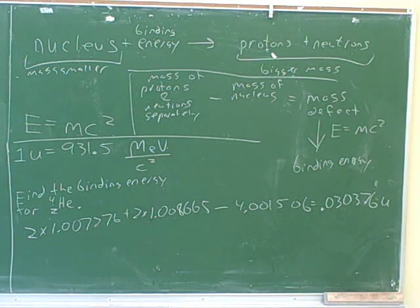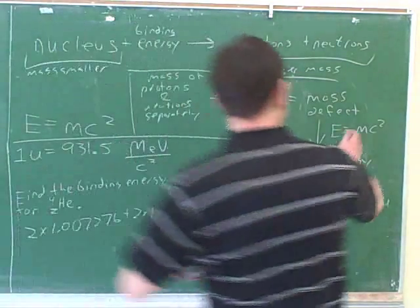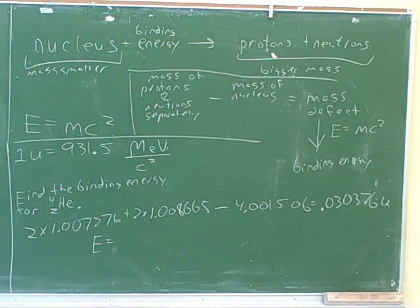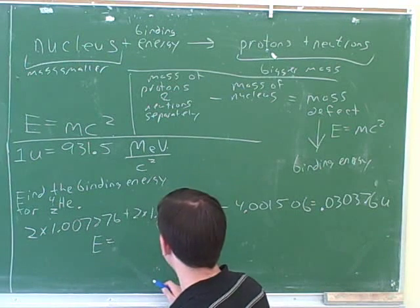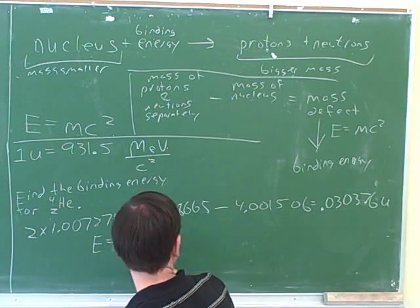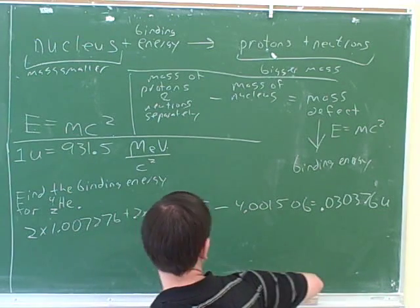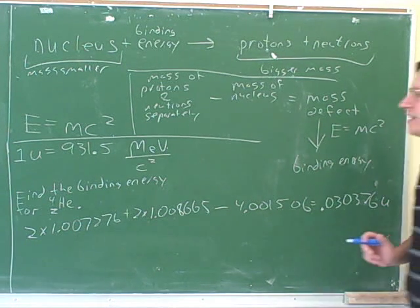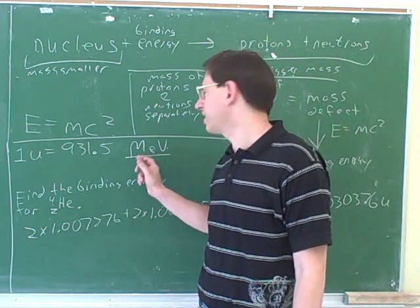What was our next step? Now we can use our E equals mc squared equation. Let's go through that together. Now in order to use the E equals mc squared equation, it turns out that u are not going to be the most convenient units. Instead, it will be much more convenient to use these units for mass: mega electron volts per c squared. Remember, even though it doesn't look like it, we proved that these really are units for mass.